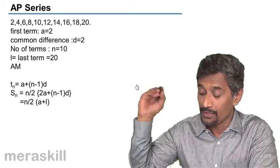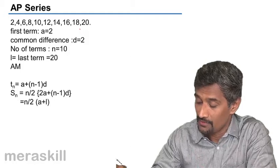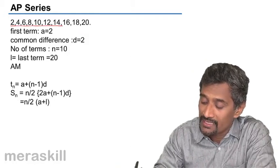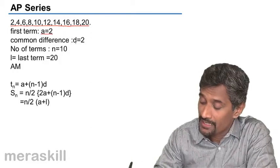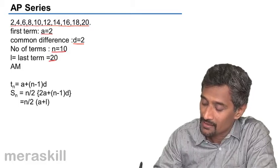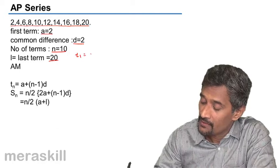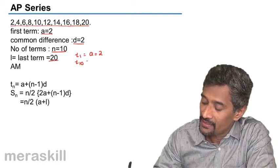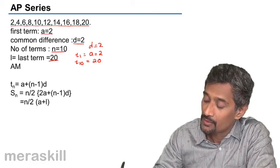So, for example, now we move over to what the actual formula for us. We have an AP series 2, 4, 6, 8, 10, 12. Here, if you see, the first term is 2 and the common difference is 2 and number of terms is 10 and the last term is 20. So, we say T1 which is also A is 2 and T10 is nothing but 20 and D is 2.